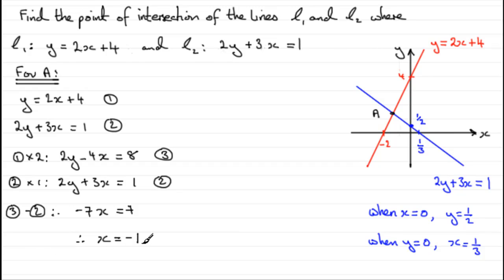And we can sub that back into equation 1 as we did before. We'll just write it down here: sub x equals minus 1 into equation 1. And as before, then we got that y equals 2 times minus 1 plus 4, y equals 2. So again, therefore the point of intersection has to be the coordinates minus 1, 2.